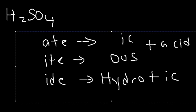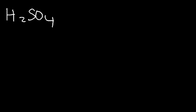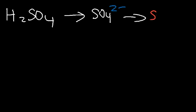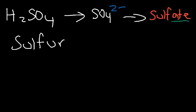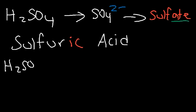H₂SO₄ contains the polyatomic ion sulfate. To name acids you need to know your polyatomic ions. We need to replace '-ate' with '-ic', so we're going to take 'sulfur' and add '-ic' to it. It's going to be called sulfuric acid. Now what if we want to name H₂SO₃?